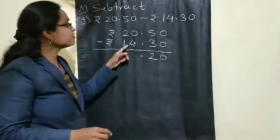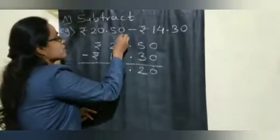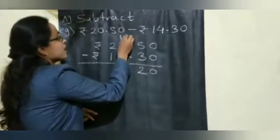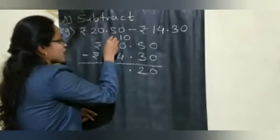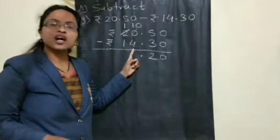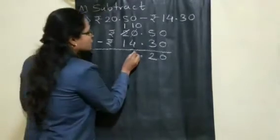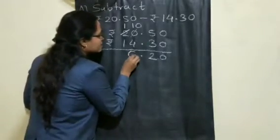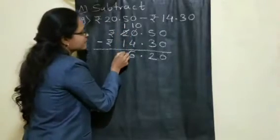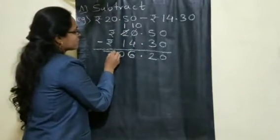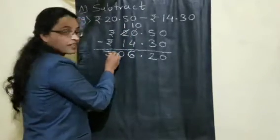Now, can you subtract 4 from 0? No. You have to borrow. So this will become 10, and how much left here? 1. 10 minus 4 is 6, so write 6. And 1 minus 1 is 0. So don't forget to write the rupees symbol.